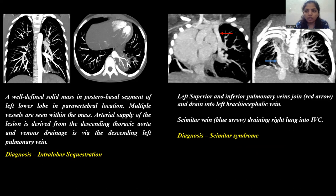Coronal contrast-enhanced CT images show the left superior and inferior pulmonary veins joining and draining into the left brachiocephalic vein. The right pulmonary vein is seen draining into the IVC. This is a characteristic finding of Scimitar syndrome.